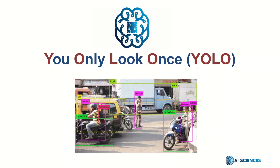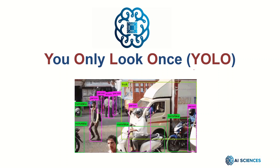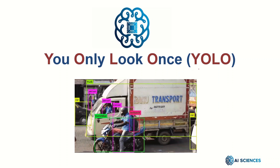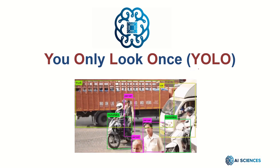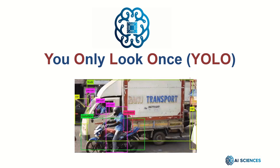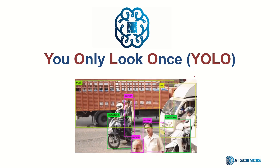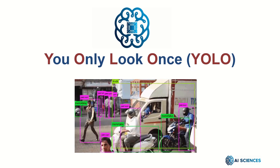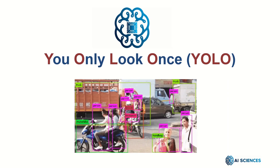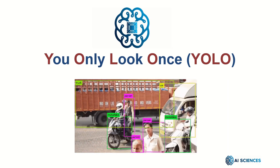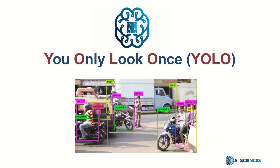But when it comes to the combination of speed, efficiency, and accuracy, YOLO actually stays at the top. At the end of the day, it's an algorithm that detects, classifies, and localizes different kinds of objects in an image very, very efficiently.